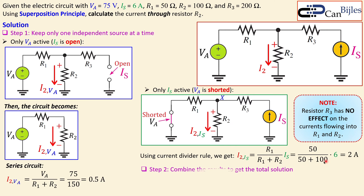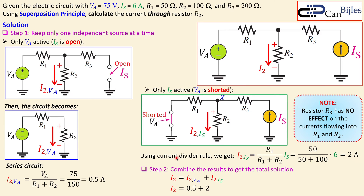We are now almost done, because we have the two separate results. Step two says: combine the results to get the total solution. I2 equals I2 due to Va plus I2 due to Is. We have 0.5 amps from the first step and 2 amps from the second step, giving a total of 2.5 amps.